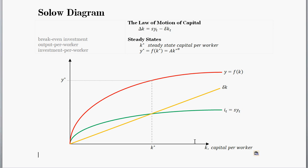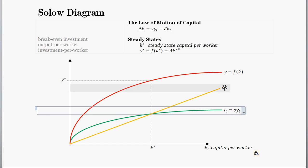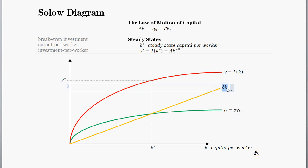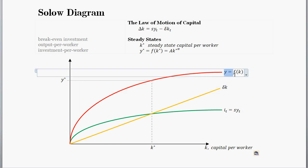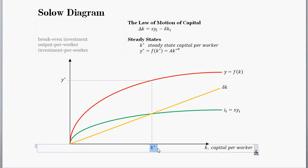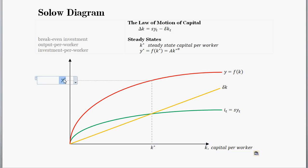Let's start off with the Solow diagram. You have the investment curve here in green, the break-even investment line in yellow, and then output per person here in red. Suppose we start off at the steady state value of capital per worker, K star, where the investment line and the break-even line intersect, which then defines our steady state value of output per worker.